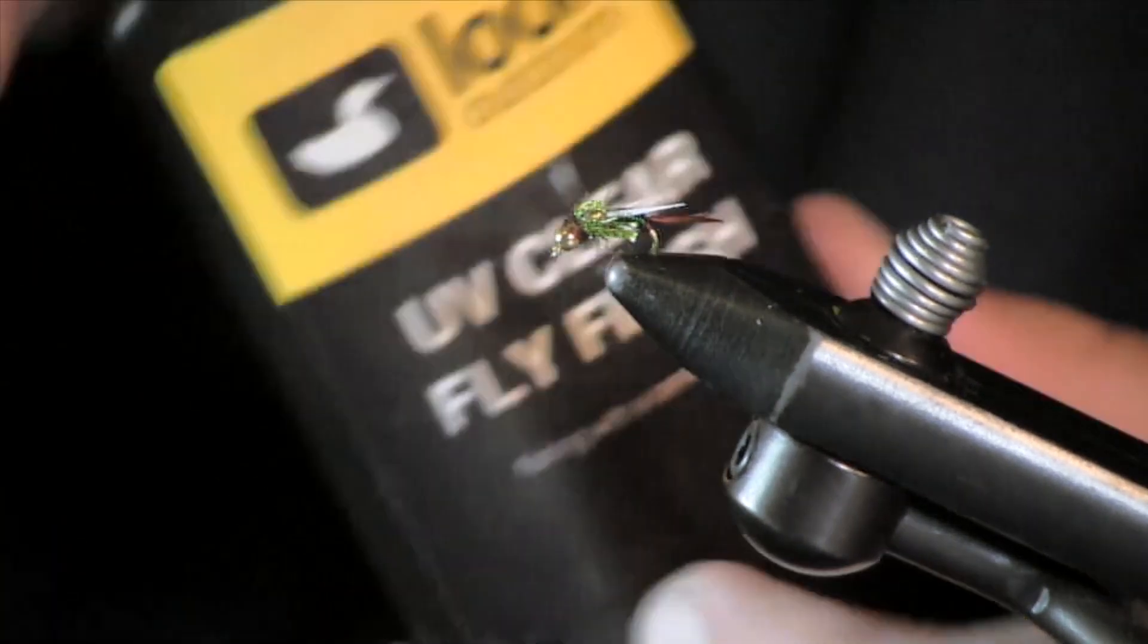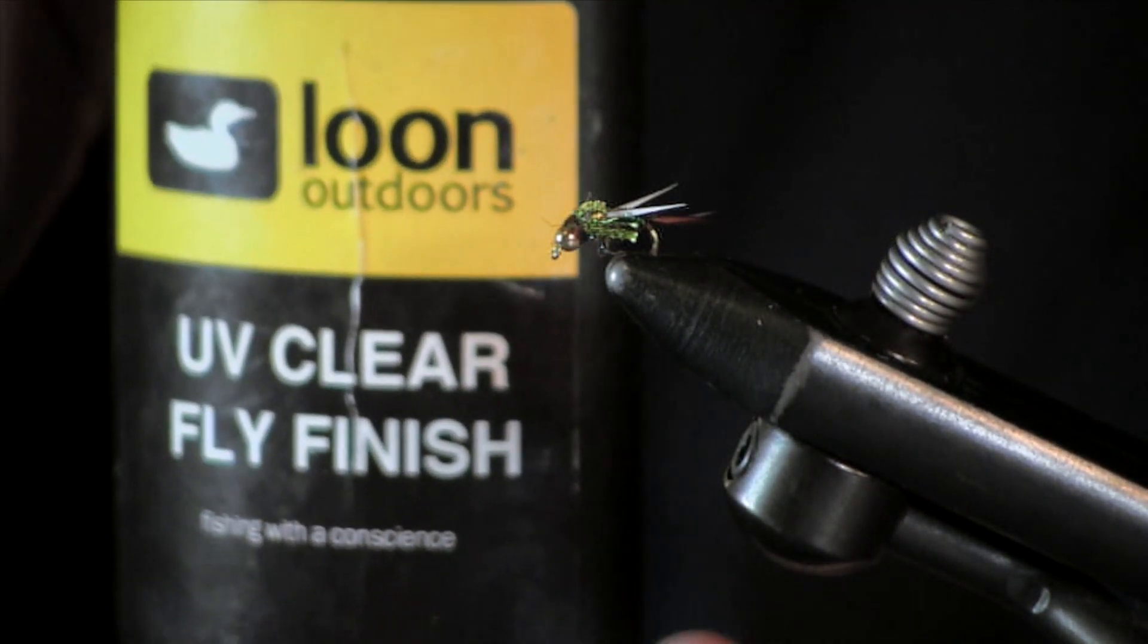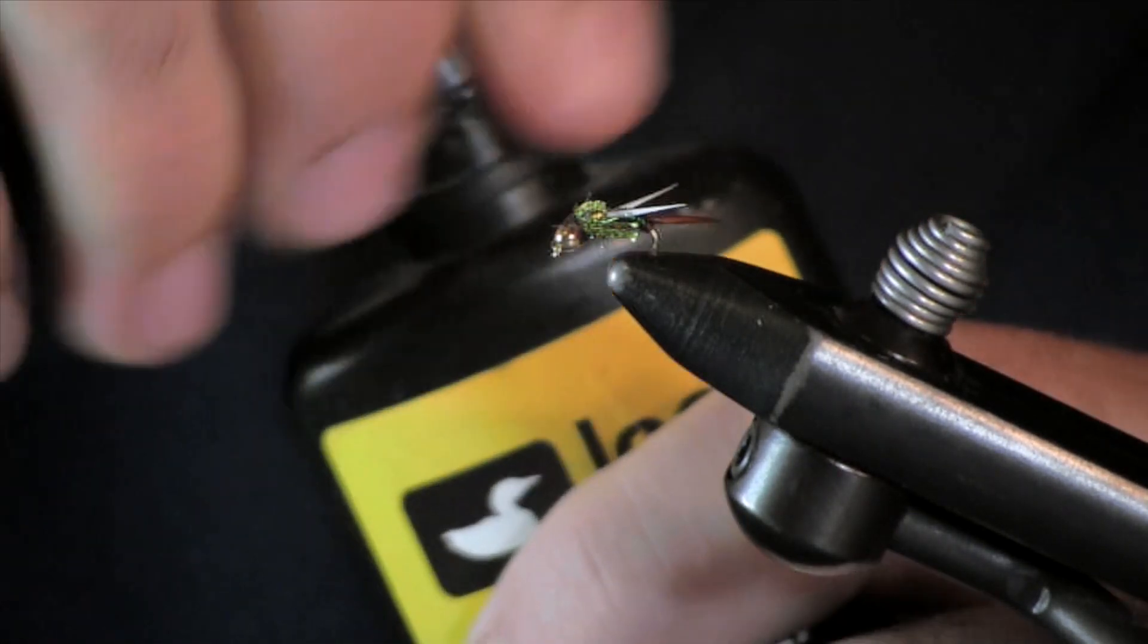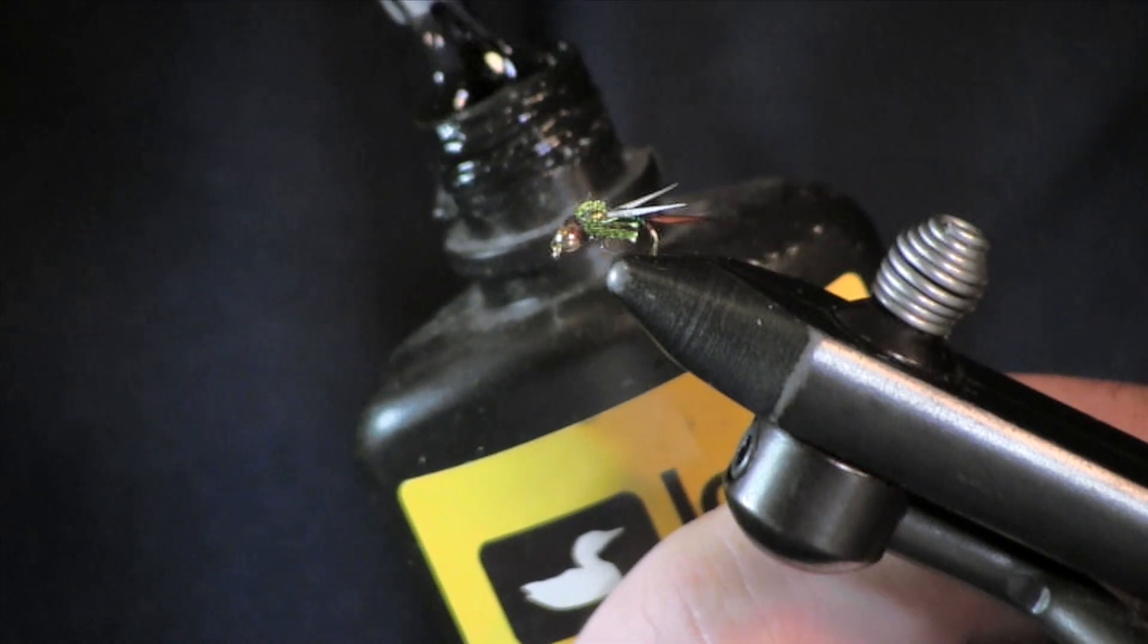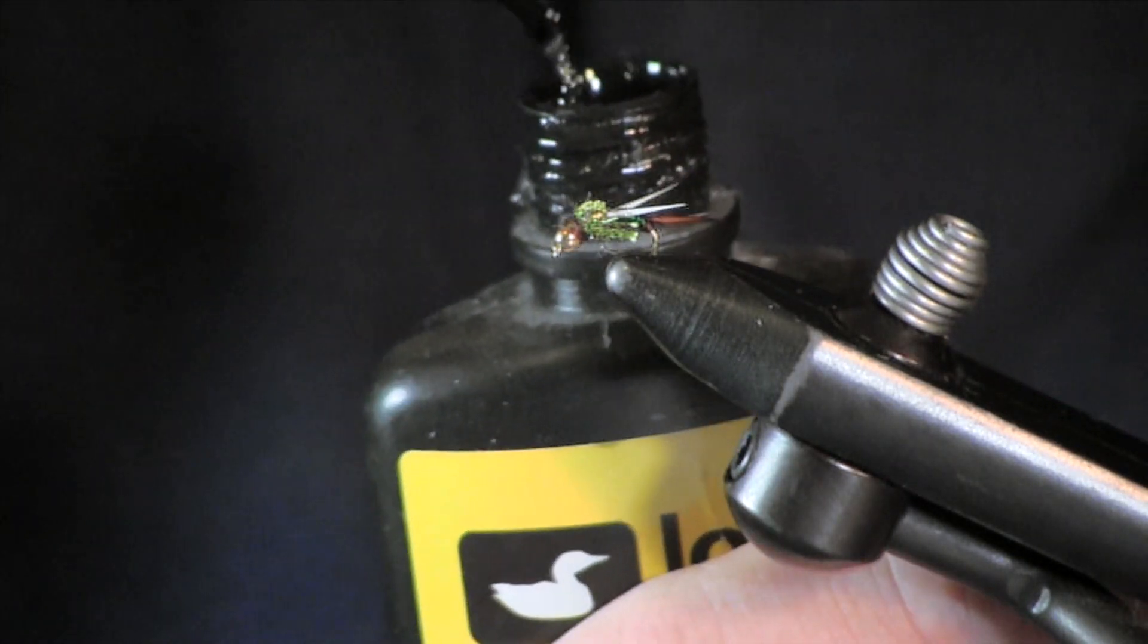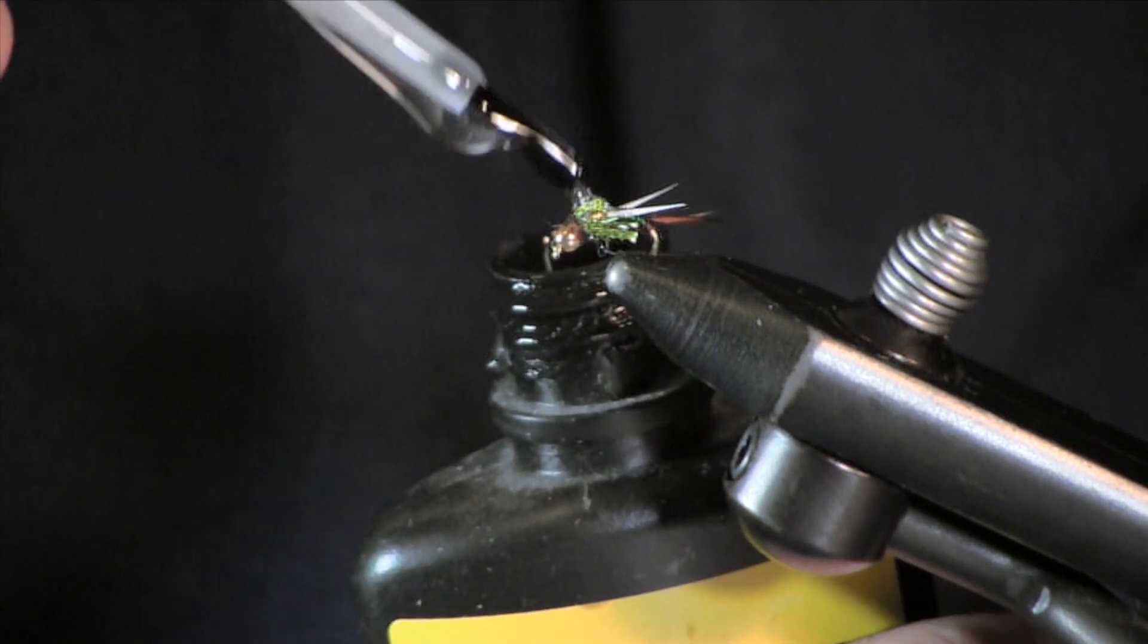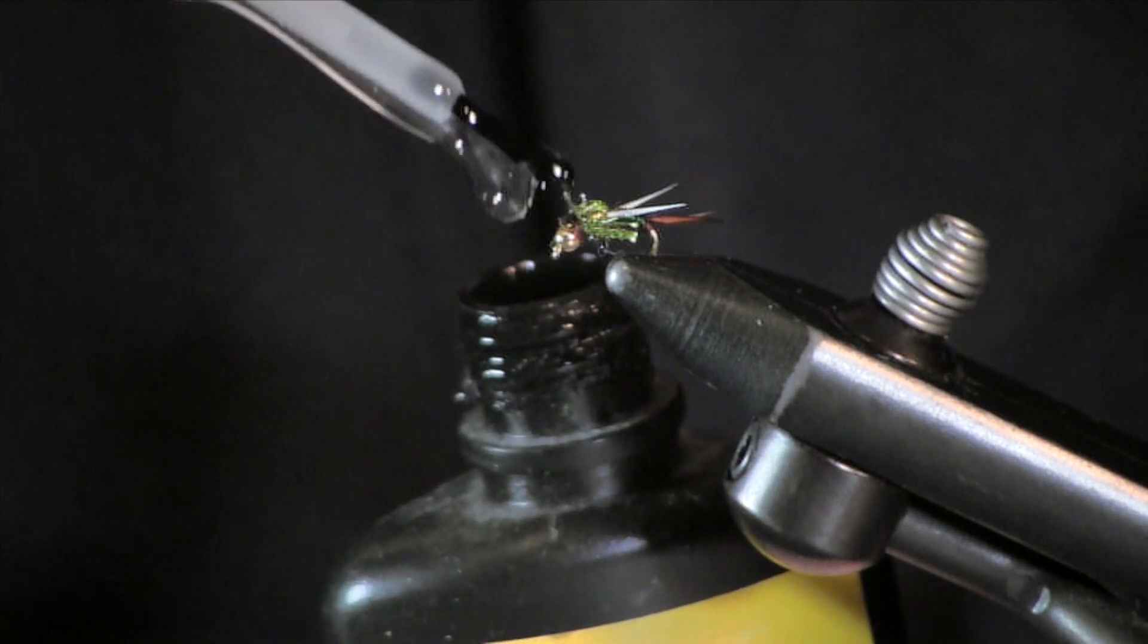Then the other thing I will do with this fly. You will see me on other videos using your UV clear finish, your UV glue. I will put a little bit of dab of that on the flashback part of the fly here. Just to strengthen that up. Give it a little hard shell case. And get a little bit of that over my thread to strengthen up my knot.